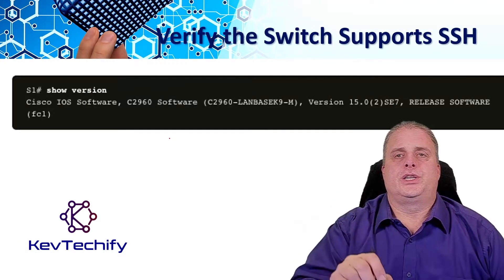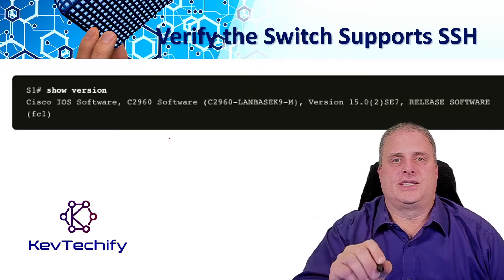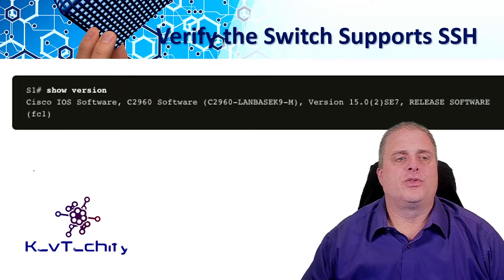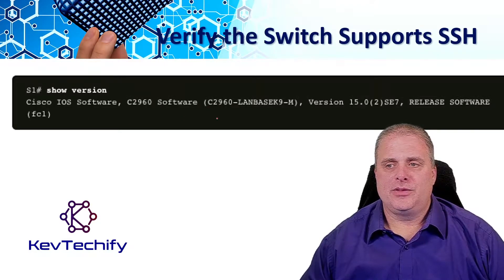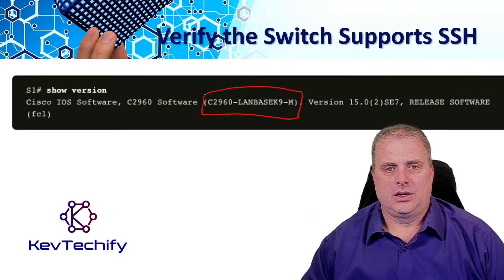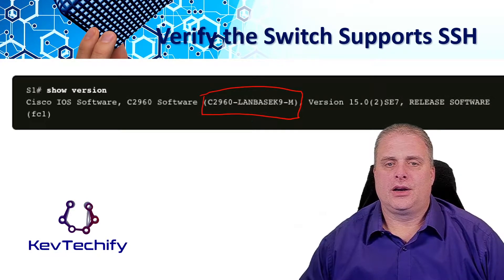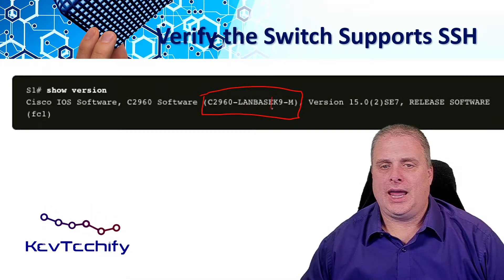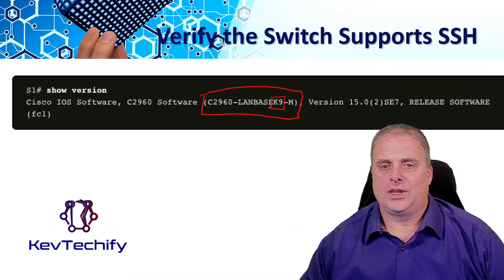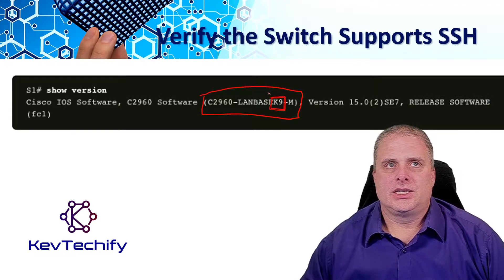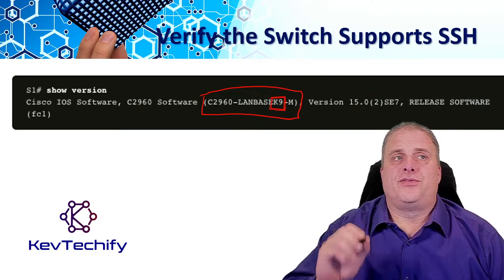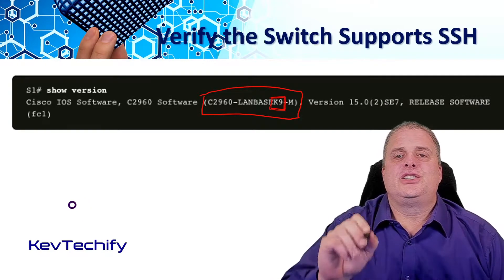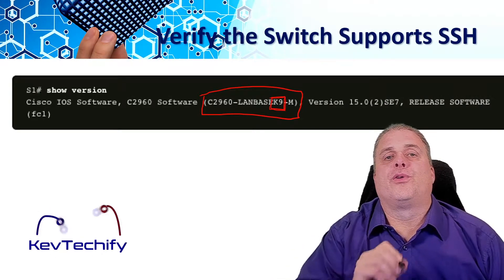To verify that your switch supports SSH, you enter the show version command. In the show version output, at the name of your software, you're looking for the K9 feature at the end of the LAN base designation. What the K9 feature indicates is that it supports the cryptographic features and capabilities, meaning it does support the encryption required for SSH.